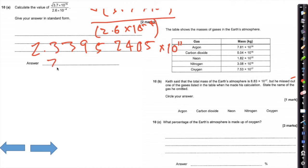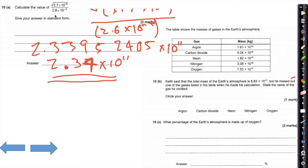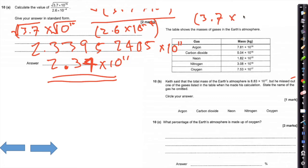It says 2.33952405 times 10 to the 11. In my answer I'd probably just say 2.34 times 10 to the 11. If you wanted to be sure of all the marks, you could split it down: the square root of 3.7 times 10 to the 15, showing that the square root of all of this is the same as saying it to the power of a half — 3.7 times 10 to the 15 all to the power of a half.